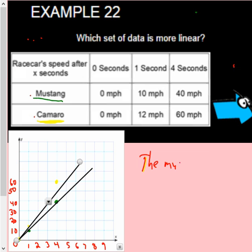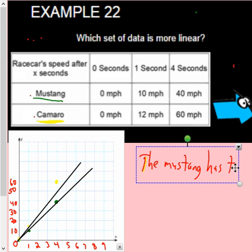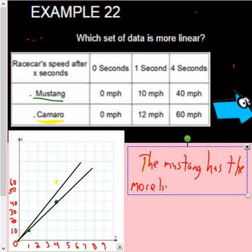So the Mustang has the more linear data set.